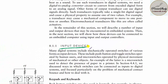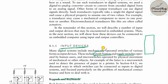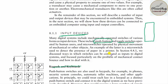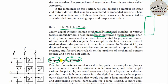Let us talk about input devices. We are familiar with push buttons, toggle switches, keypads, and keyboards — all examples of input devices. In lifts, you use a push button to select a floor. In a laptop, you use a keyboard to type. On older cell phones, a keypad was used to text or make calls.